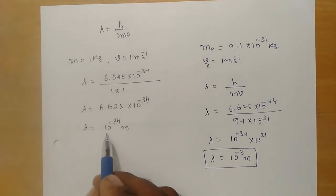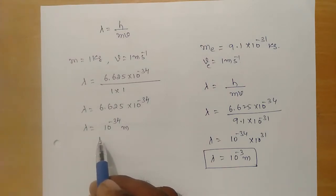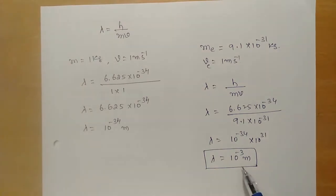In our daily life, it is difficult to observe matter waves associated with material particles because the de Broglie wavelength associated with them will be very small. But for subatomic and atomic particles, it is in the measurable range, so we can measure the de Broglie wavelength associated with microparticles.